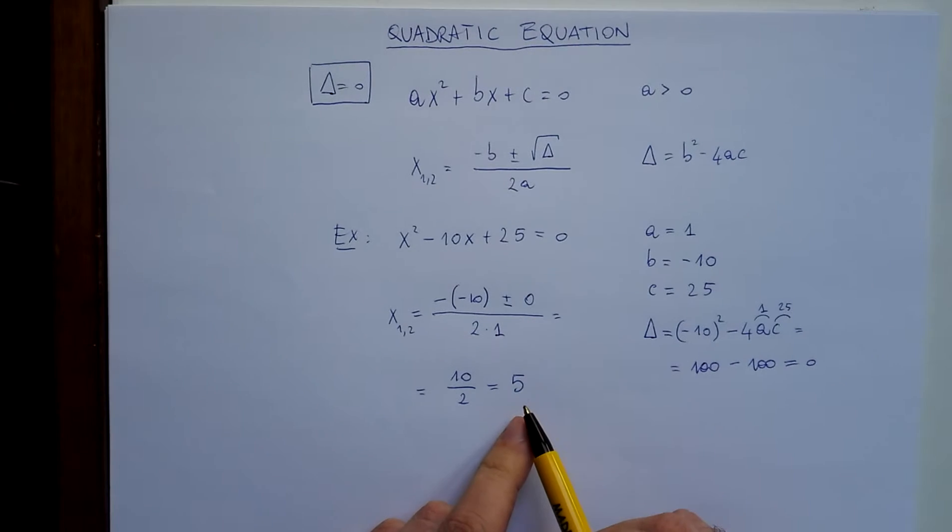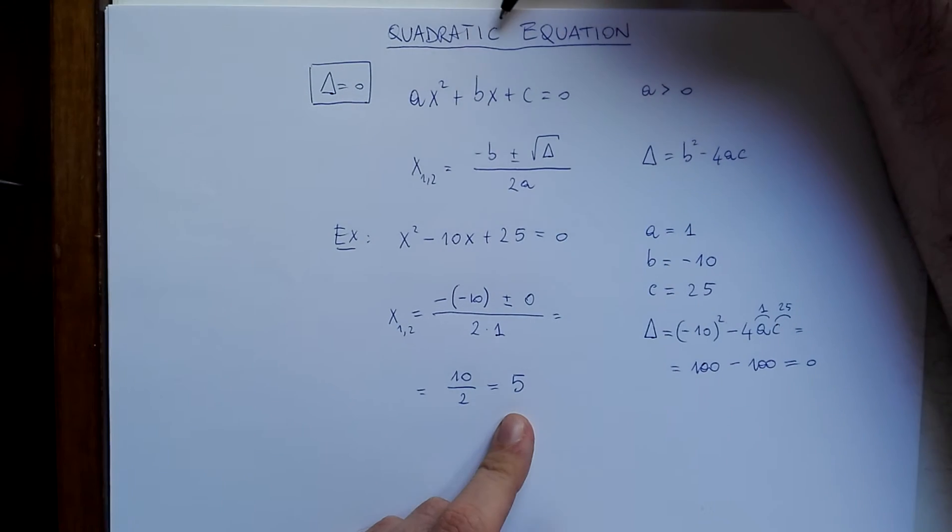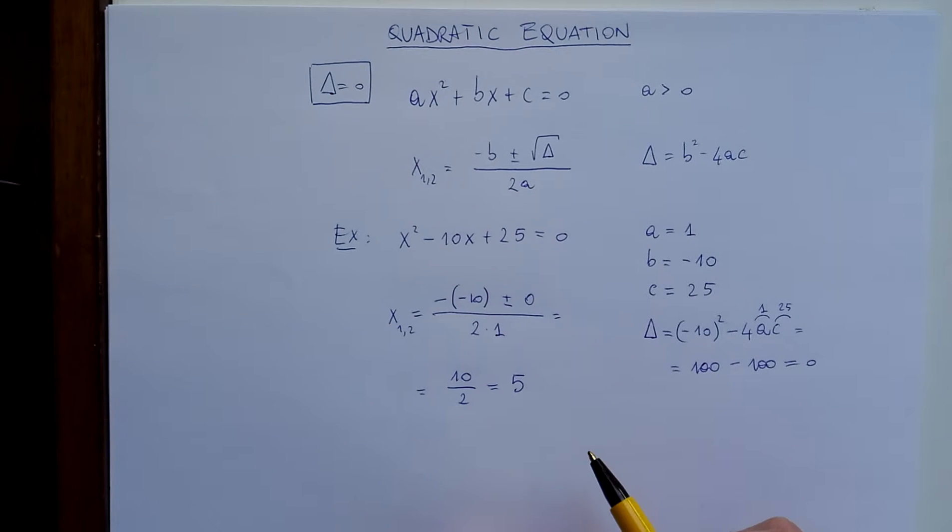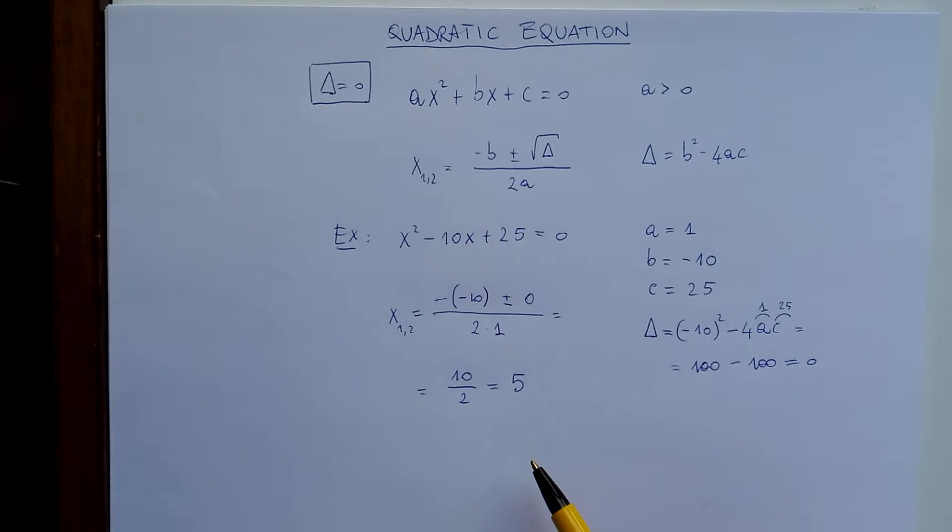So we can see that 5 is the solution to the equation, but since a quadratic equation should always have two solutions, we say that 5 is a solution with multiplicity 2. Or we can say more easily that this equation has two solutions which are both 5.